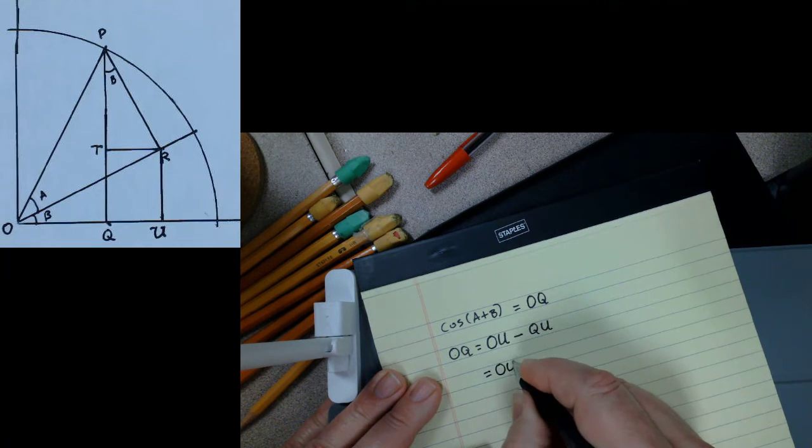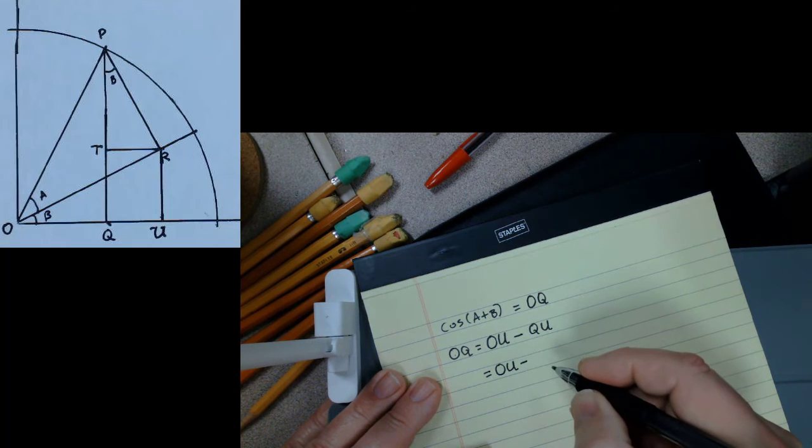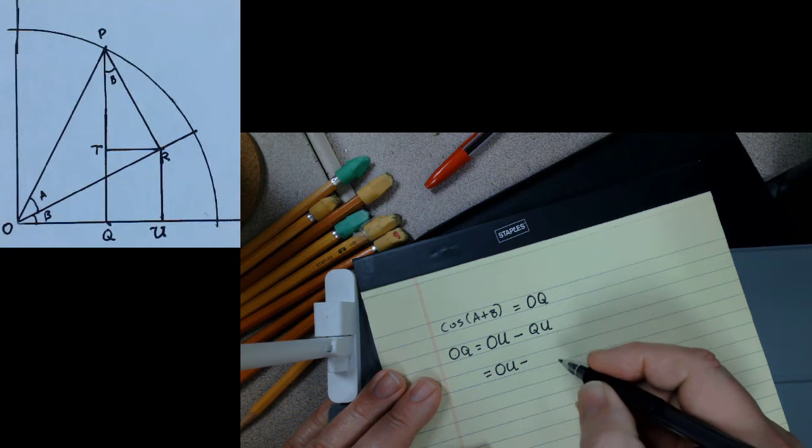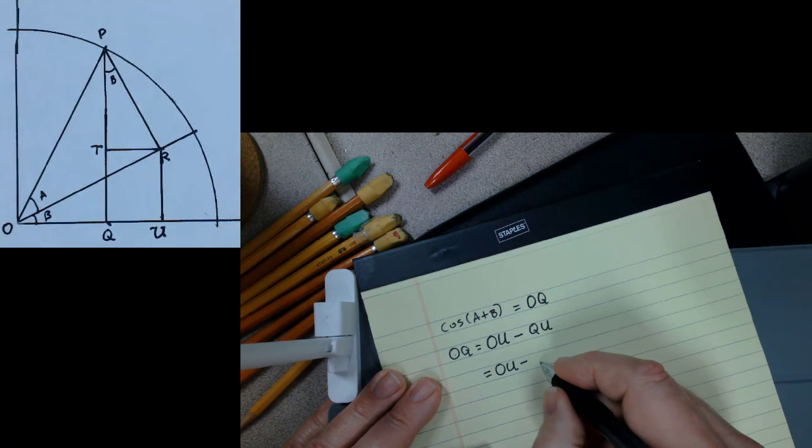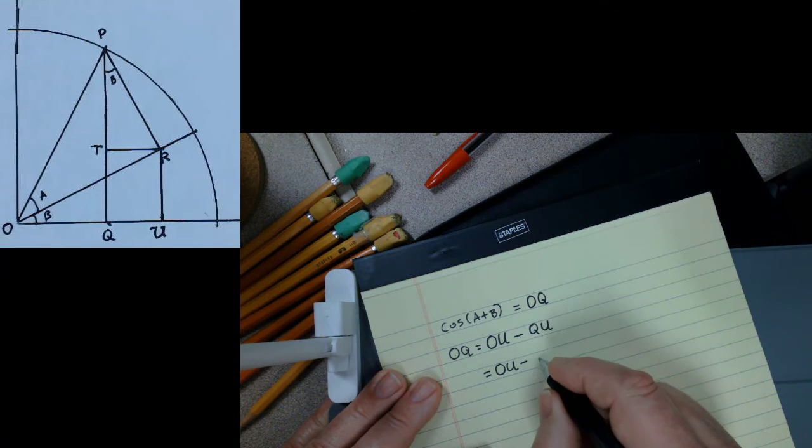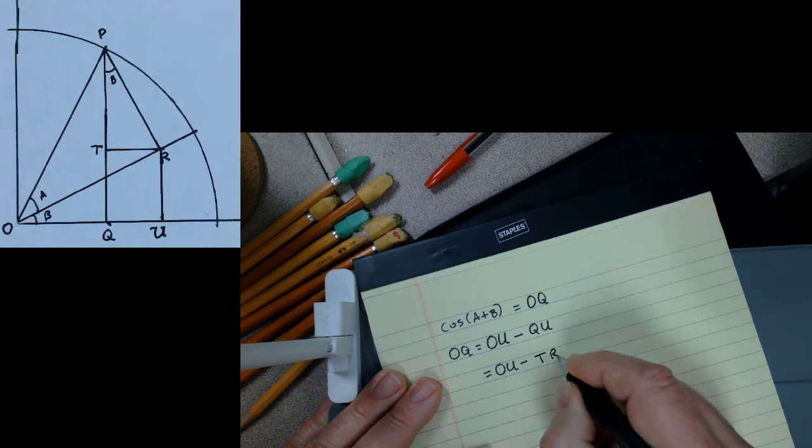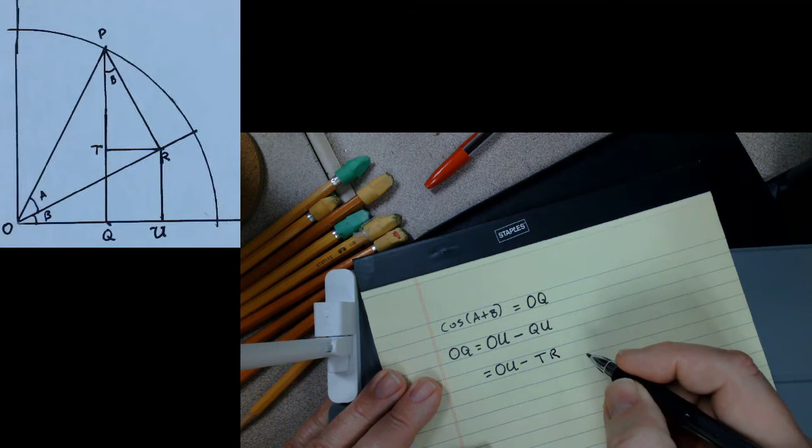Also, because they are on opposite sides of a rectangle, QU is equal to the length of the line segment TR.